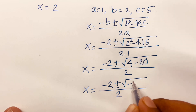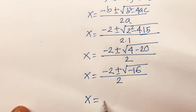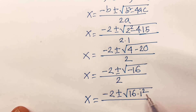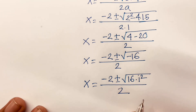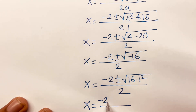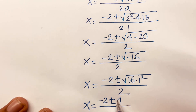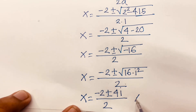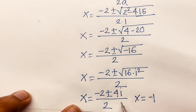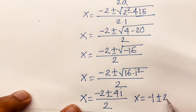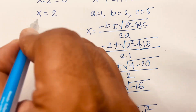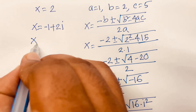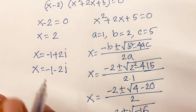Then x equals minus 2 plus or minus square root of 16 times i squared, over 2. Since the square root of 16 is 4, this gives x equals minus 2 plus or minus 4i, over 2, which simplifies to x equals minus 1 plus or minus 2i. So our final answers are: x equals 2, x equals minus 1 plus 2i, and x equals minus 1 minus 2i.